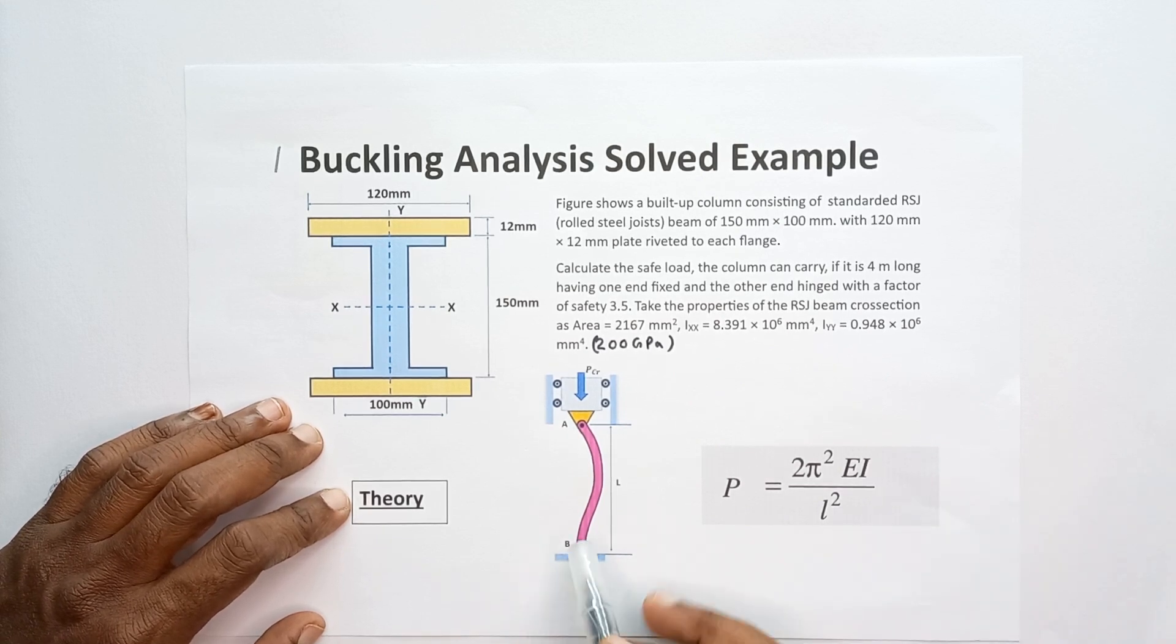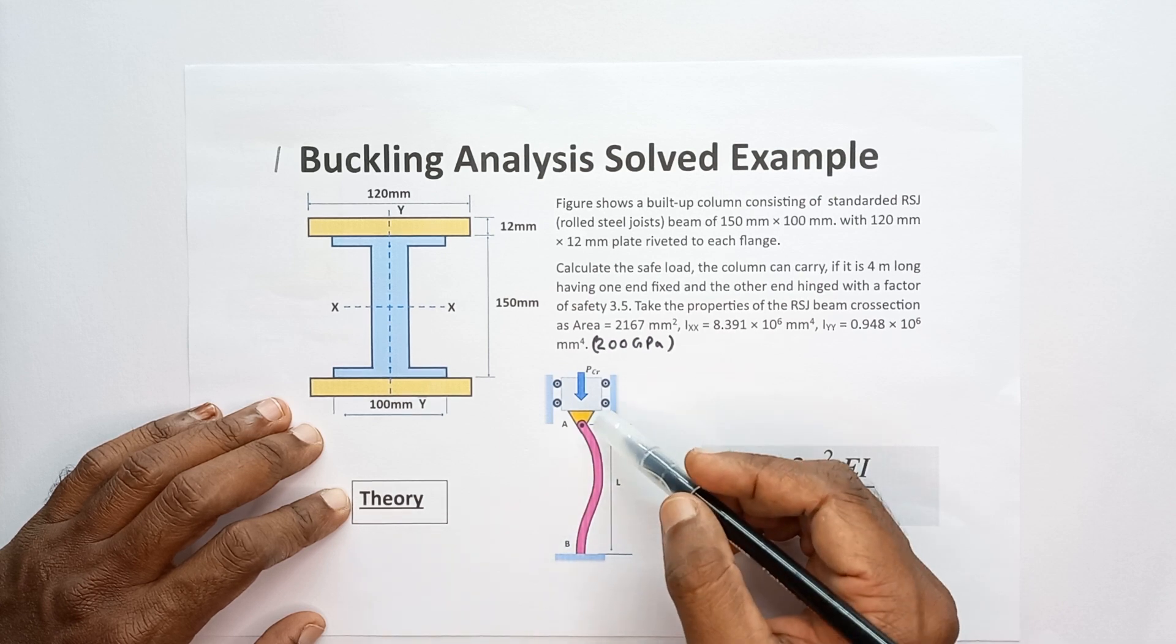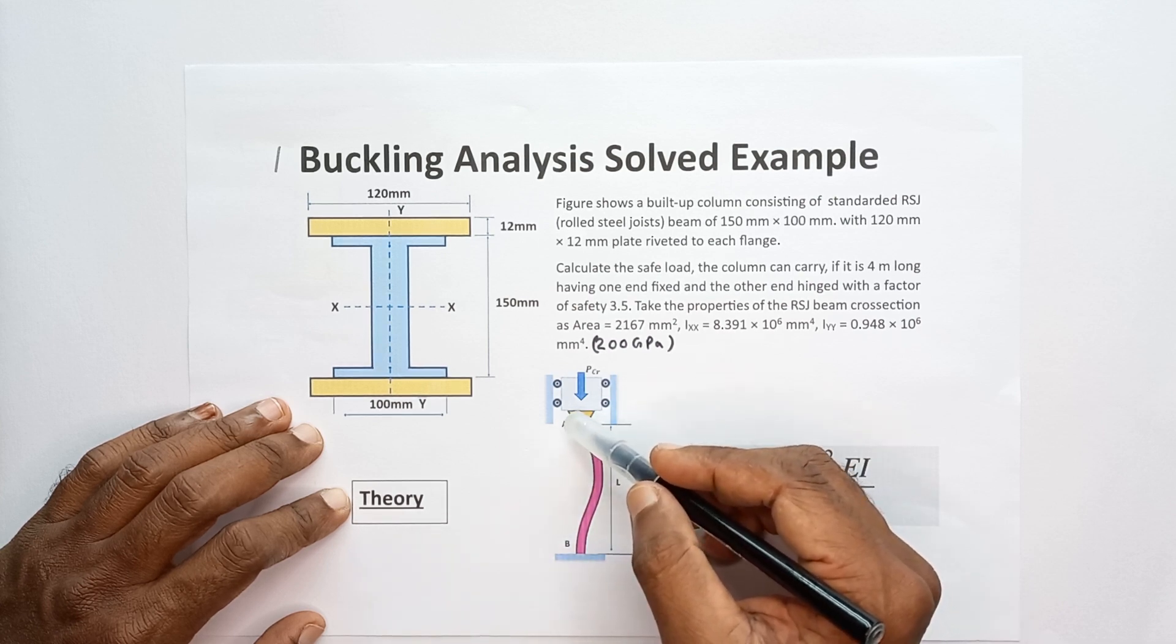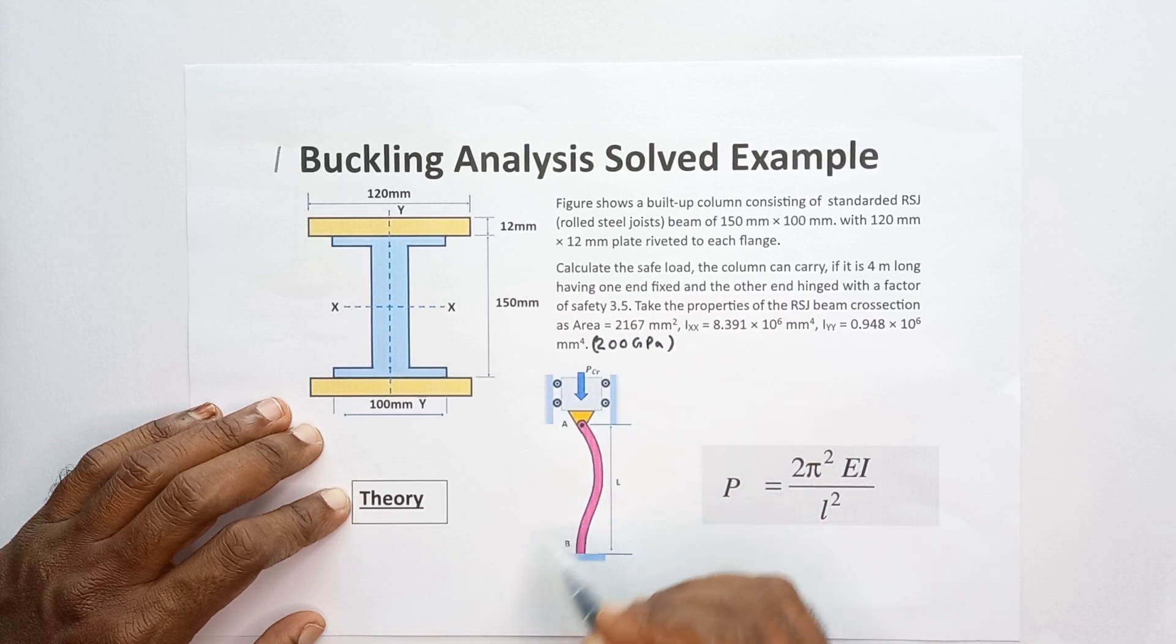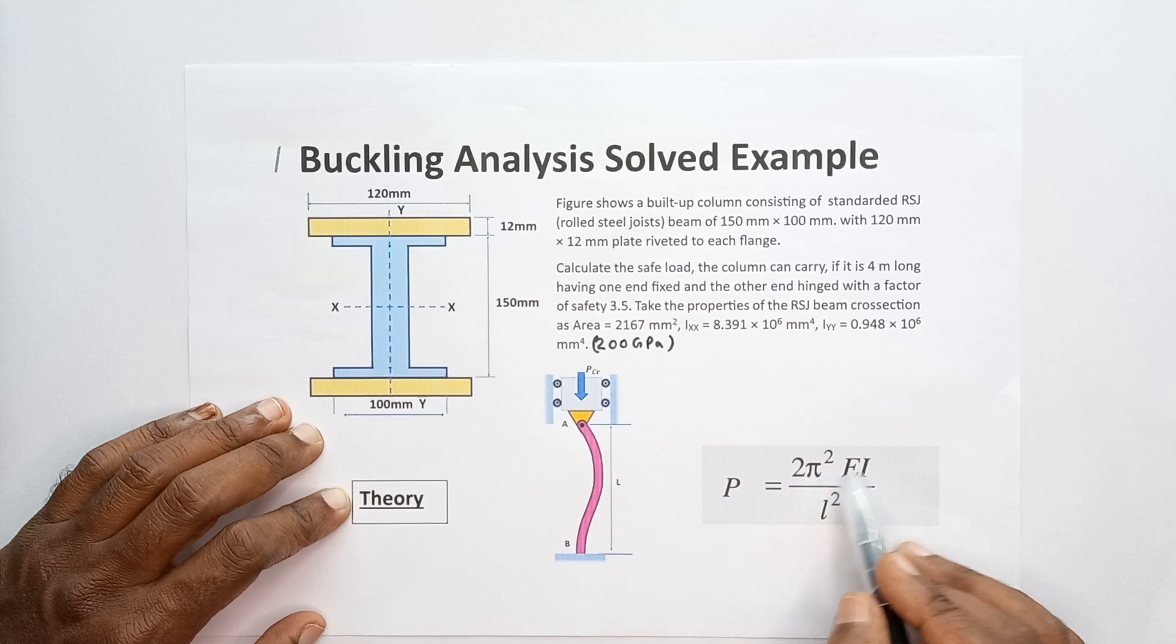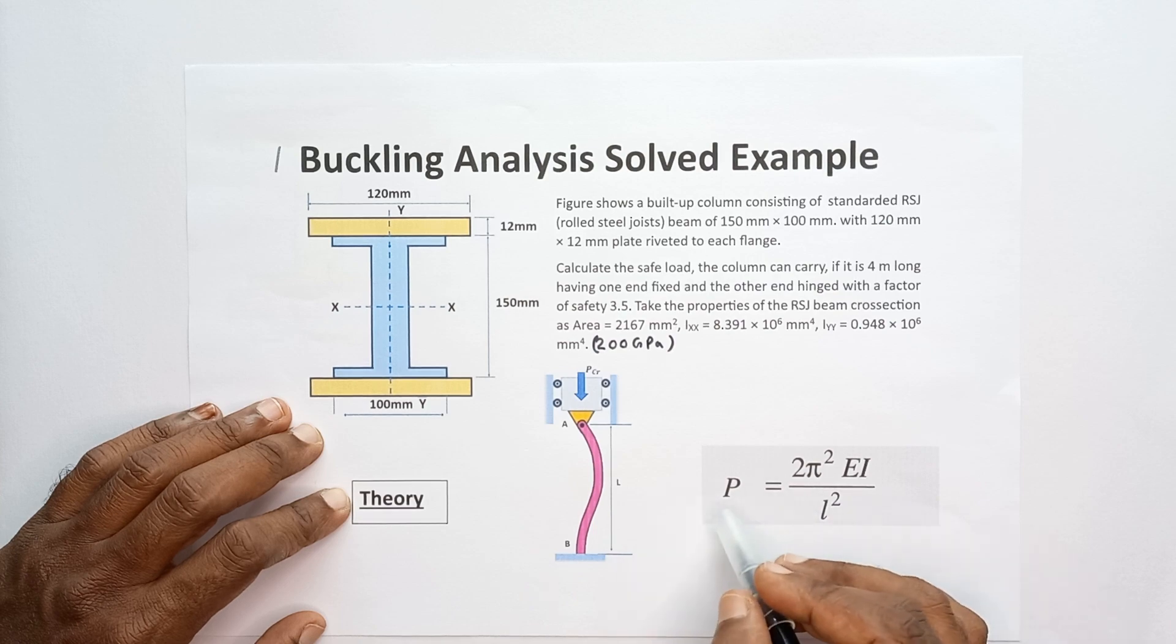For one end fixed supported and other end pin supported situation, the column buckles forming this kind of curvature. In this situation, the Euler buckling load equation is P equals 2π²EI divided by L squared. To solve this problem we are going to use Euler's buckling load equation.